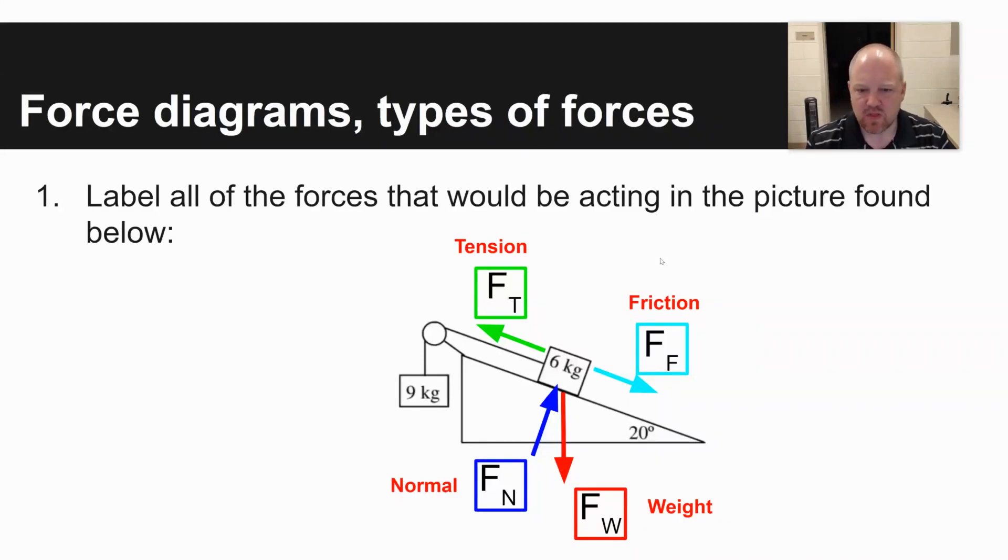I've added the different forces that are here as well as their shorthand designation like F sub T. F sub T tension, the reason it is pointing up and left is there's a string pulling on that box. F sub F, force of friction, is going to oppose that motion. F sub W is always going to point towards the center of the earth, that's the force of weight pulling an object down due to gravity. And then F sub N is perpendicular to a surface. As you can see here, the ramp is a 20 degree incline.